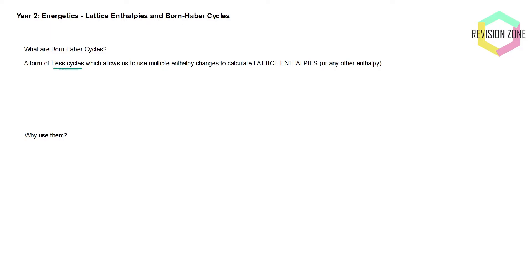It is Hess's law applied, but we use multiple enthalpy changes here to calculate any real enthalpy. At A-level we tend to look at lattice enthalpies, but from time to time you are asked to calculate other enthalpy changes within that Born-Haber Cycle. So we end up with a multi-stage enthalpy diagram where we are going from each stage via different enthalpies — it could be going down here and going up here, and you'll see something similar to this later on in the video.